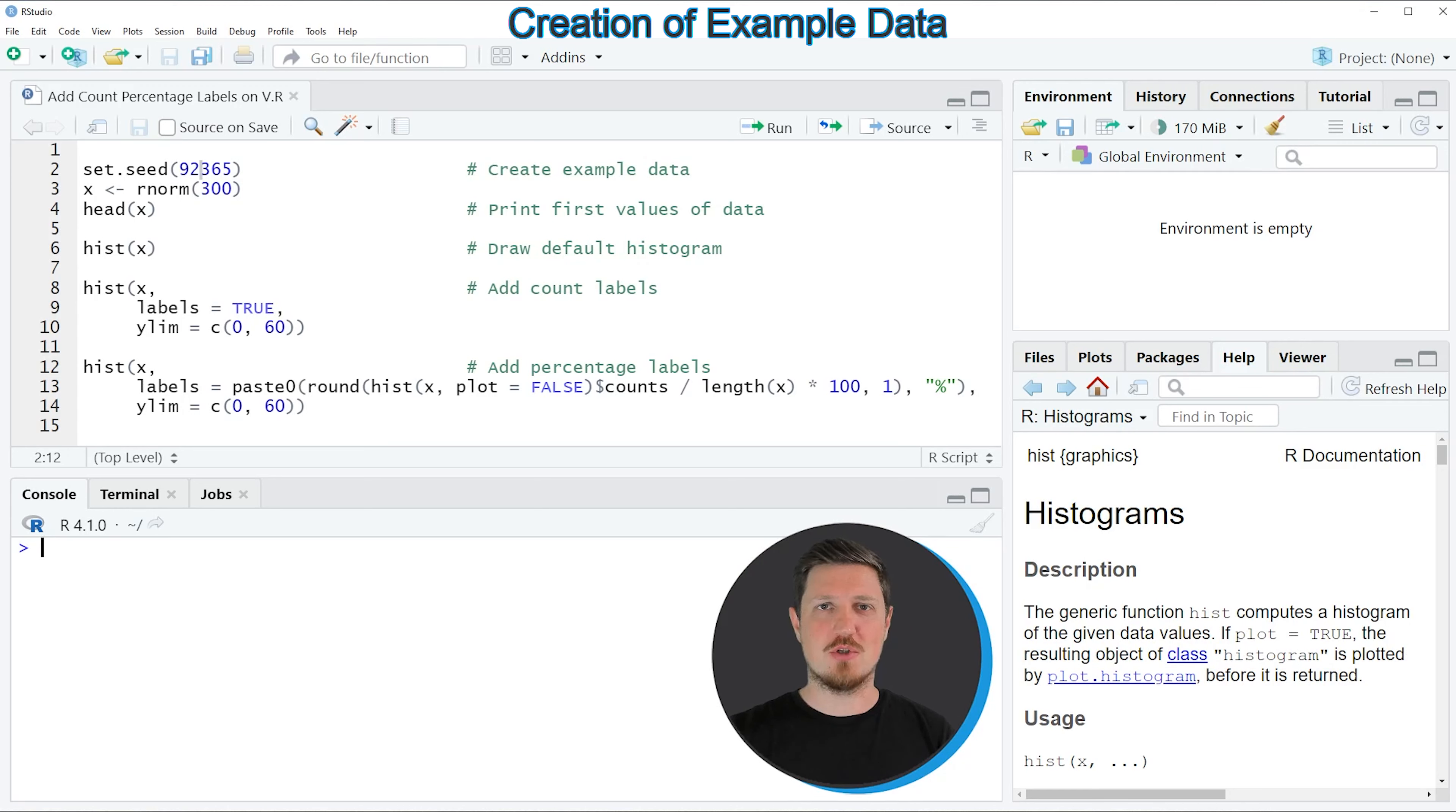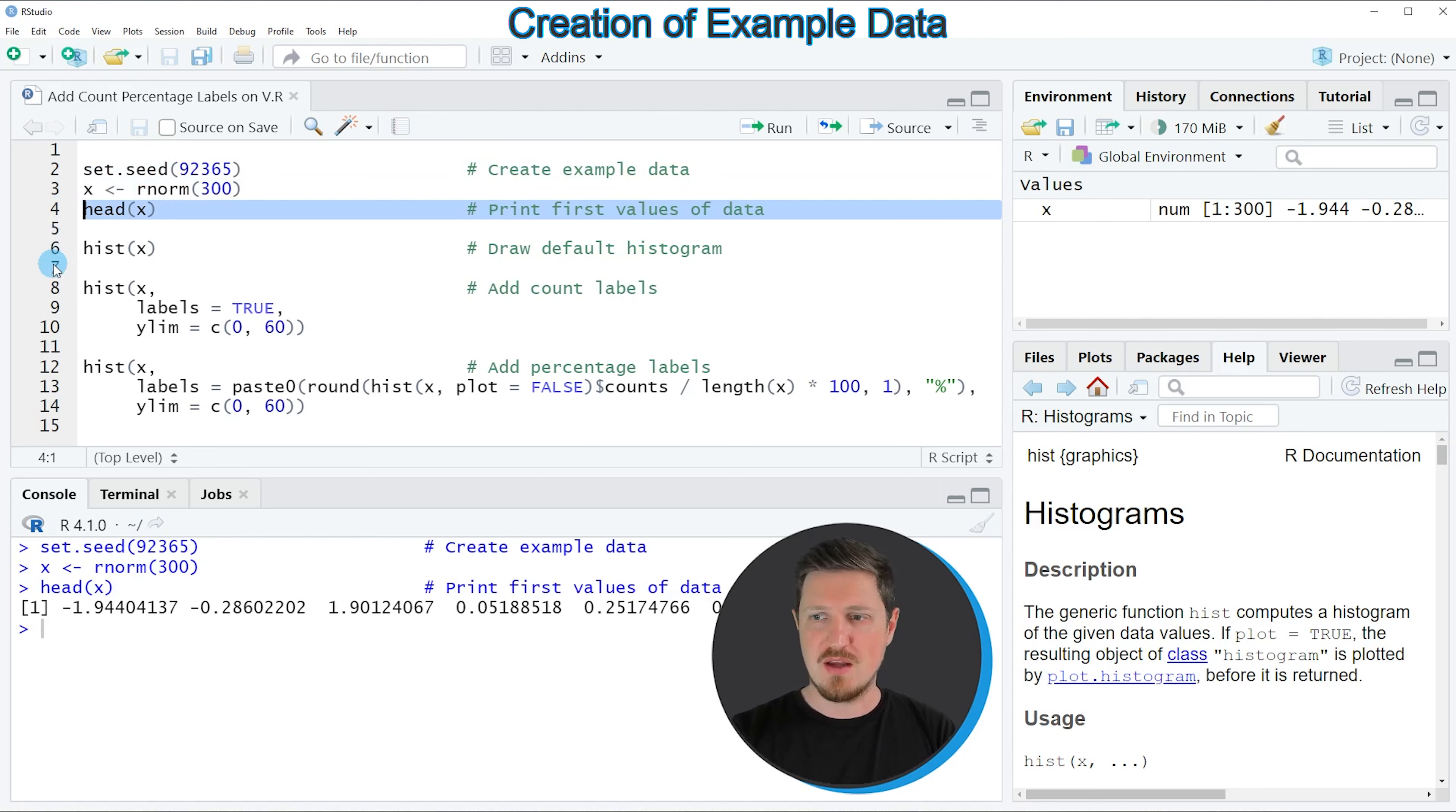In this video I will show you an example based on the data that we can create with lines 2 and 3 of the code. If you run these lines of code, you can see that a new numeric vector object is appearing at the top right which is called X. We can have a look at the first six values of this vector object by running line 4 of the code, and then you can see at the bottom that we have created a vector with random numeric values.